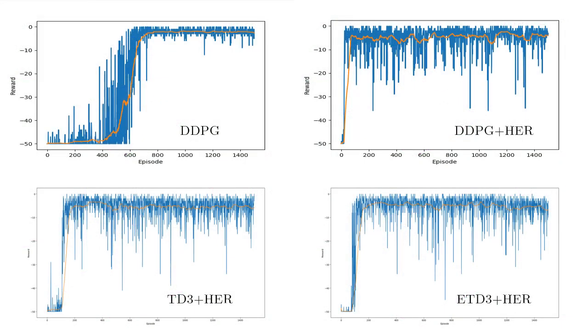Here you can see the training curves for the different algorithms. You can clearly see how DDPG learns much slower and learns only at around episode 600, whereas the others learn before 100.